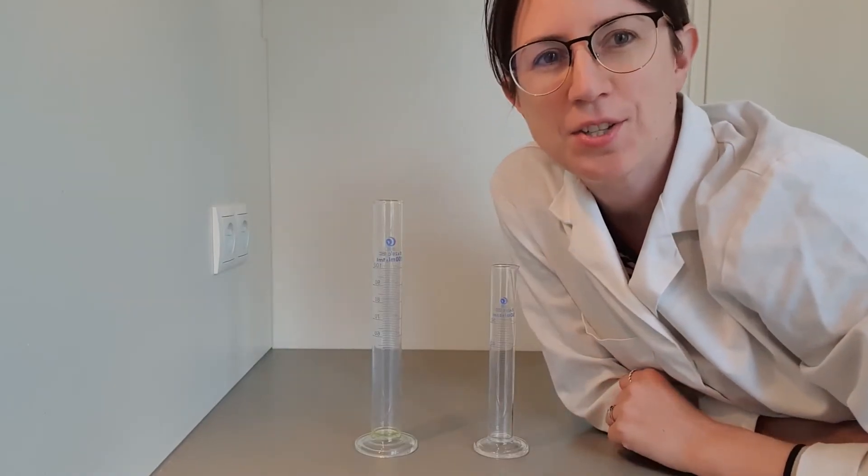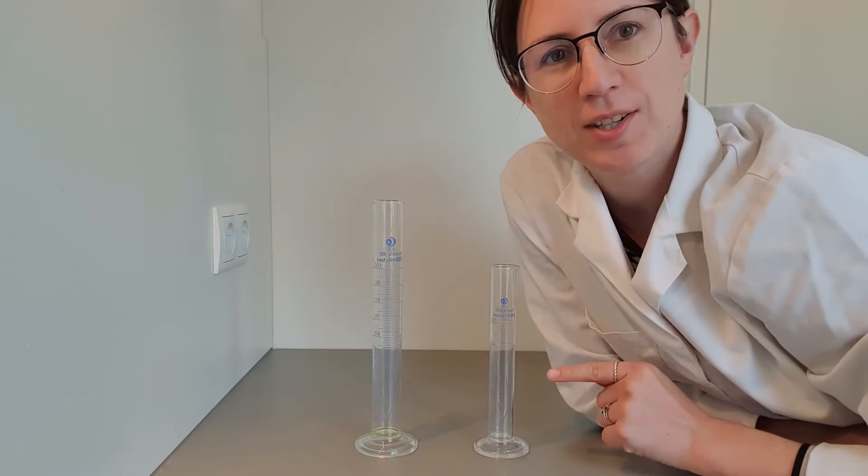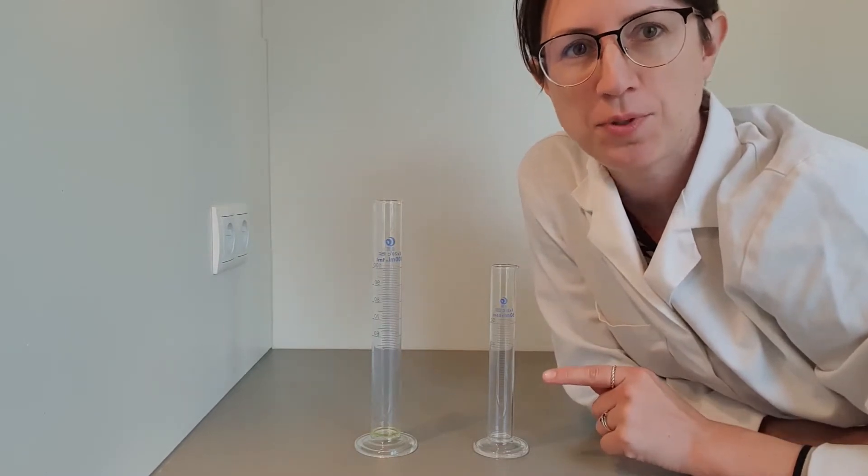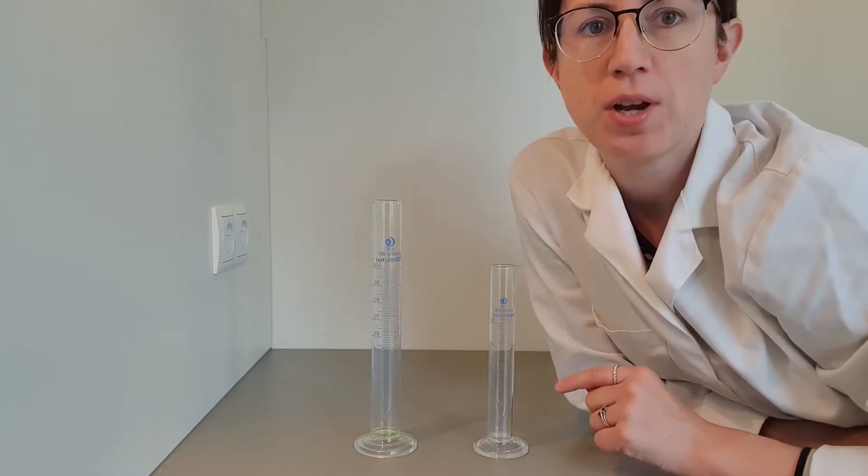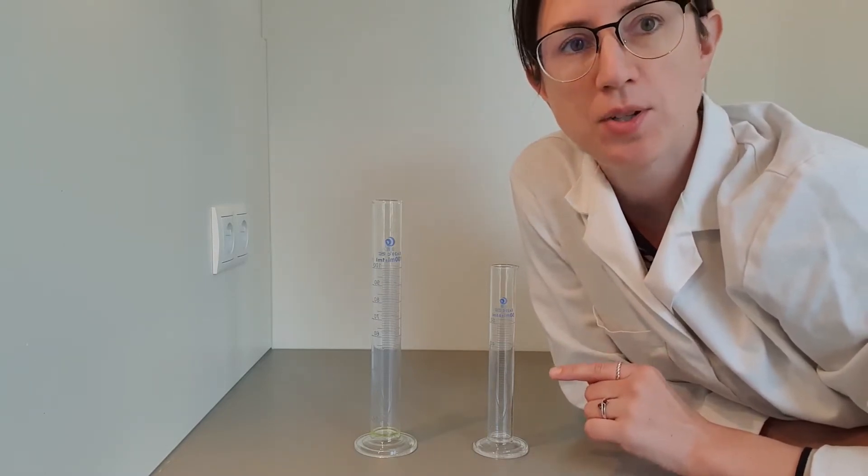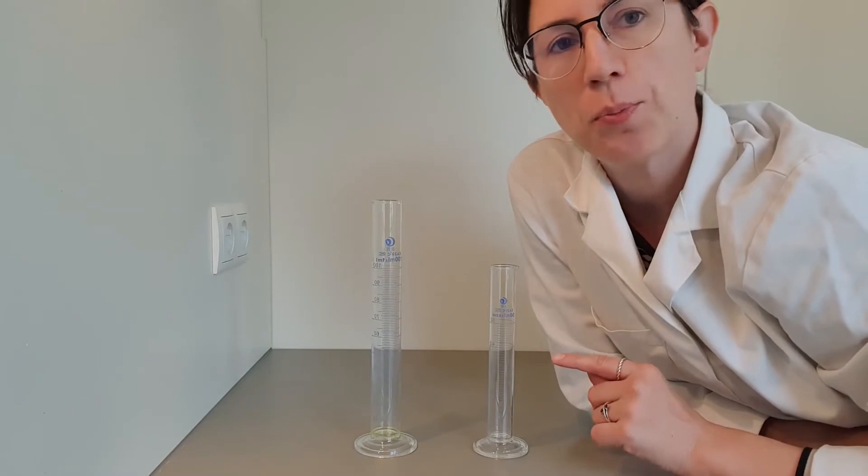Now, as every good scientist knows, we use a measuring cylinder to measure volumes, not a beaker, because measuring cylinders are more precise. They're not the most precise measuring instrument, but they are a lot more precise than a beaker.